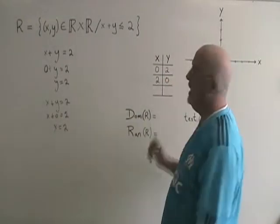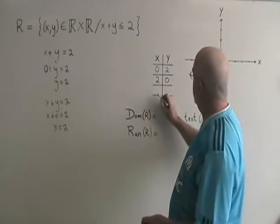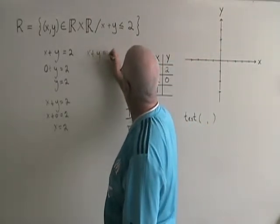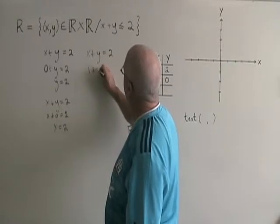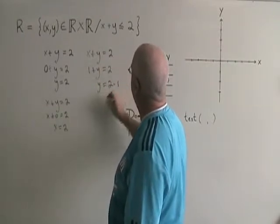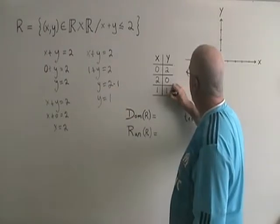and I have the point (2,0). I'll do one more point just to make sure in my table. If I make x equal to 1, I get 1 plus y equals 2. y is therefore equal to 2 minus 1, y is equal to 1, and I have the point (1,1).